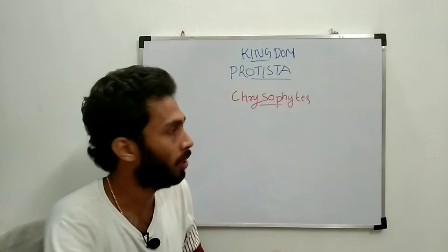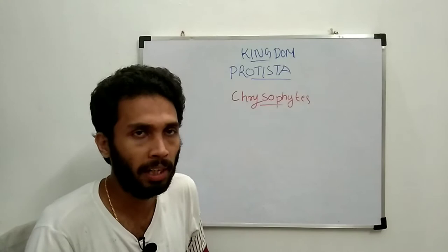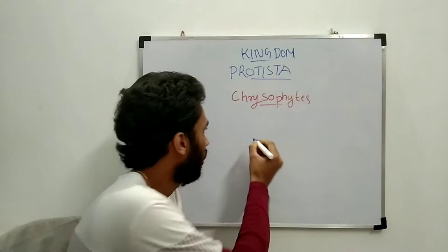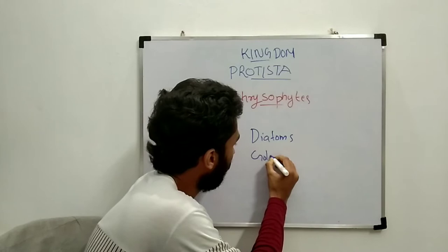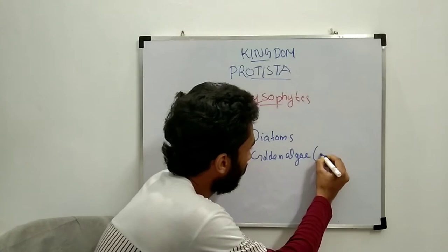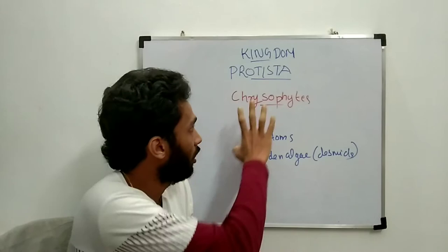Now we are going to discuss chrysophytes. In the class, we are going to talk about a few introductory features that are important. Chrysophytes include two types: diatoms and golden algae.